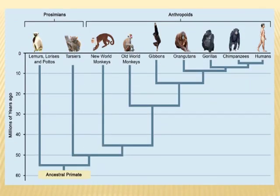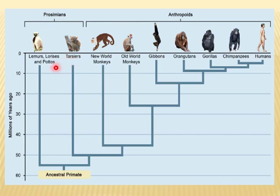This is a dendrogram showing the phyletic lineage of primates. It shows that primates originated about 60 million years ago. The ancestral primates, also known as prosimians or before-monkey groups, include lemurs, lorises, tarsiers, and porous.